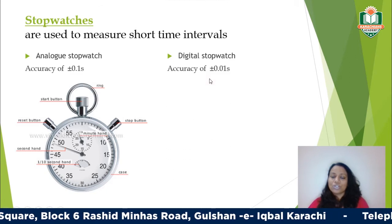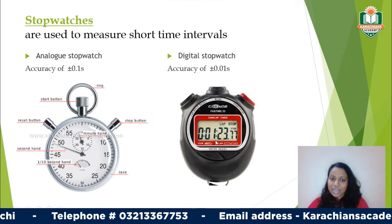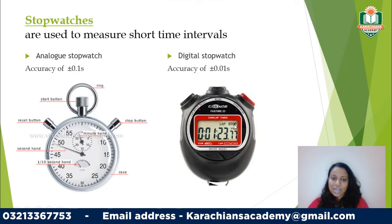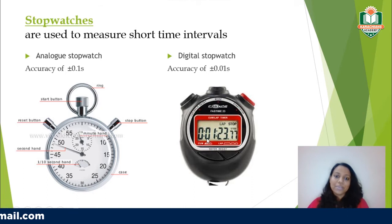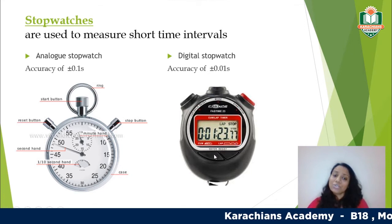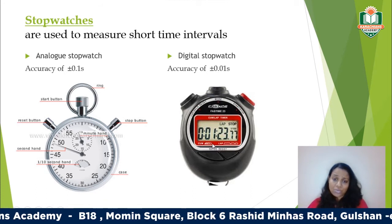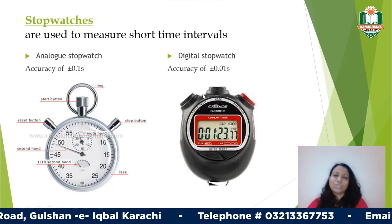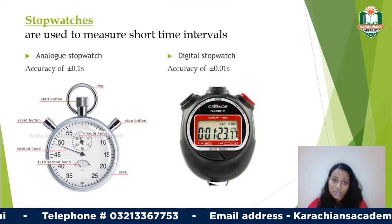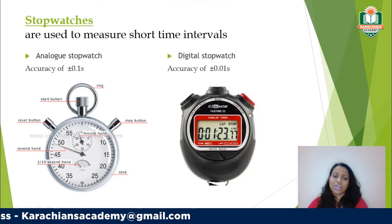On the digital stopwatch, the first digits show hours, the next two show minutes, then the next two are seconds, and the last digits show one-hundredth of a second. For example, a reading might show one minute, twenty-three point seventy-seven seconds. Some stopwatches don't have the hours part — just minutes, seconds, and hundredths of a second. The accuracy of a digital stopwatch is 0.01 second.